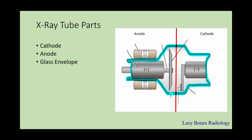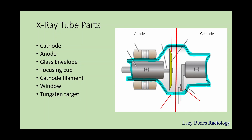Now let's talk about parts within the cathode: the focusing cup, and next is the cathode filament, which is within the focusing cup. On the anode side, there is the window, next is a tungsten target, and right behind it is the spinning anode, and lastly, the rotor. I'm briefly covering the different parts of the x-ray tube so you can have a basic knowledge of how the x-ray tube is set up.